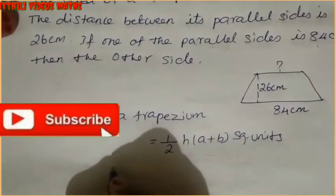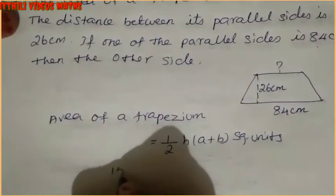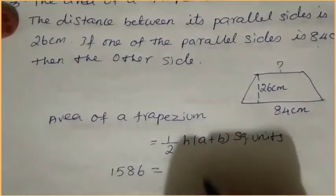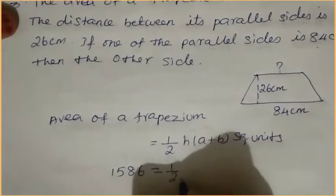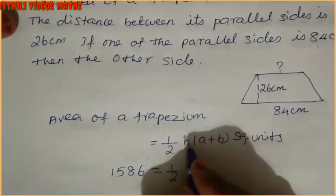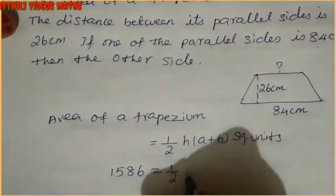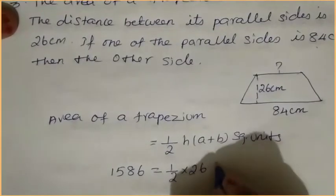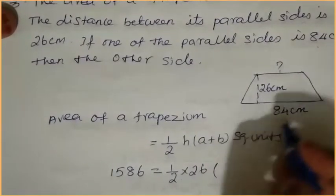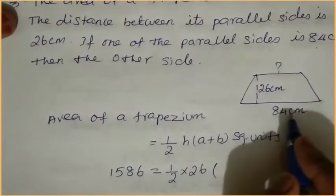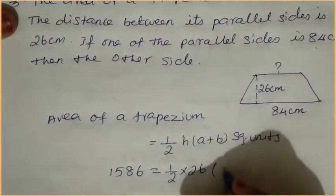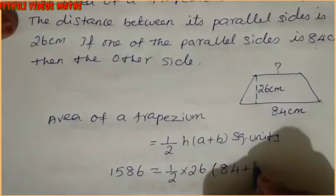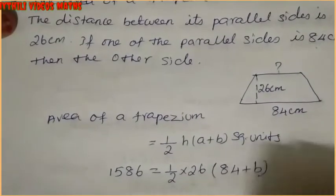Area is given — that is 1586. Then 1 by 2, and h value is 26. A value — that is one parallel side — is 84. Plus B value, which we have to find, keep as it is. So 1 by 2 and 26 can be simplified: 1 by 2 into 26 gives 13.